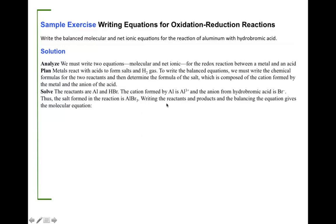By knowing this, we can now write the molecular equation. The other product will be hydrogen gas. So we have aluminum plus HBr producing AlBr₃ plus H₂. The coefficients come by balancing this equation.